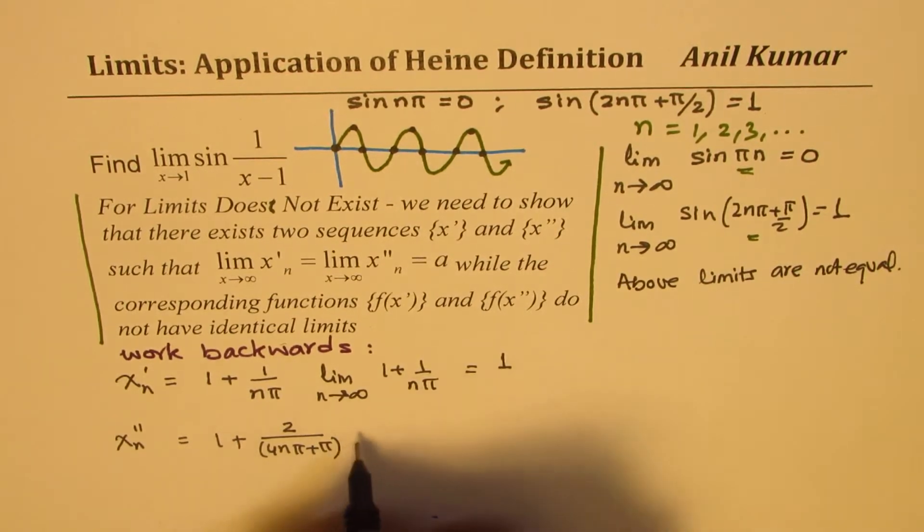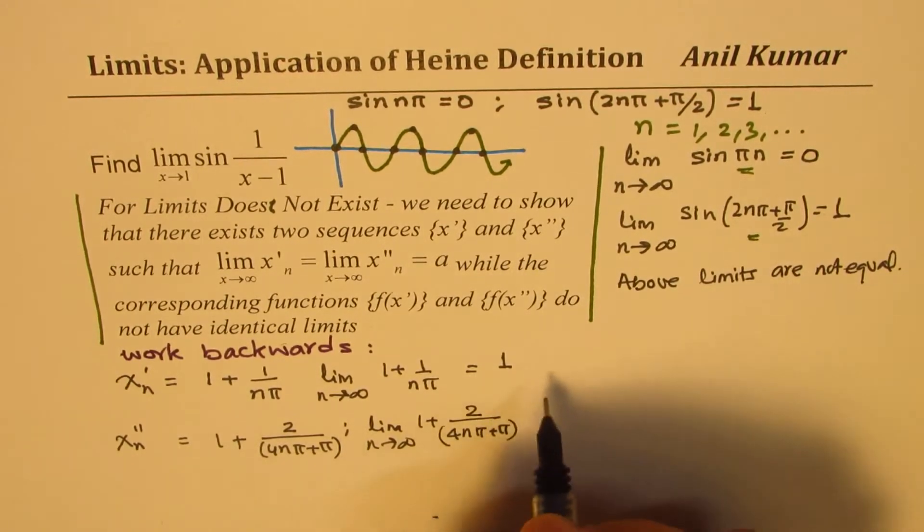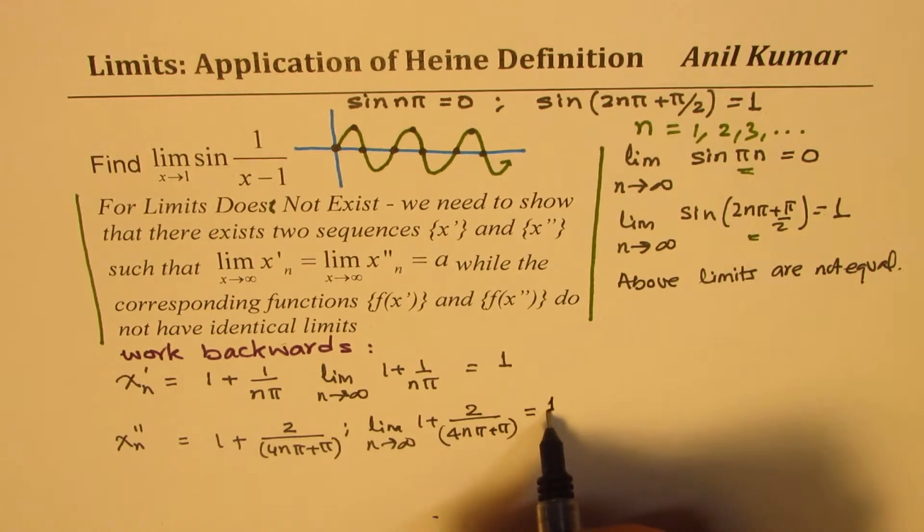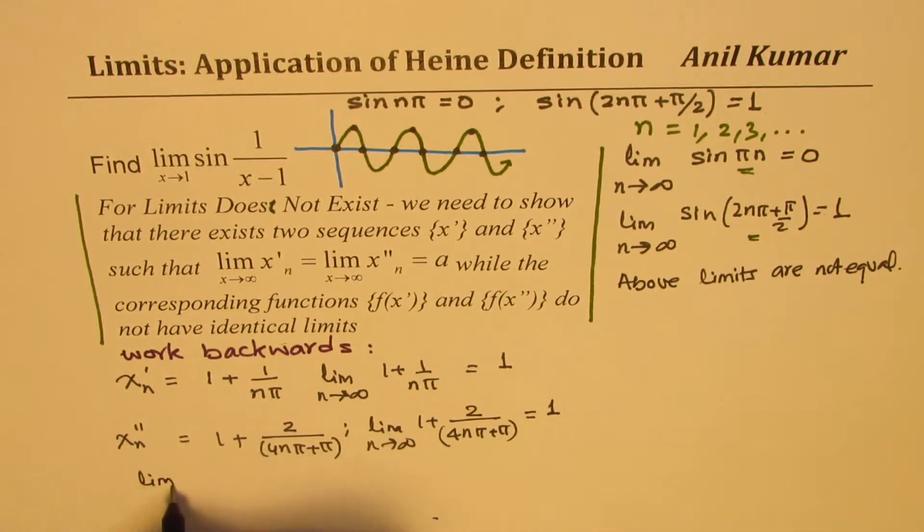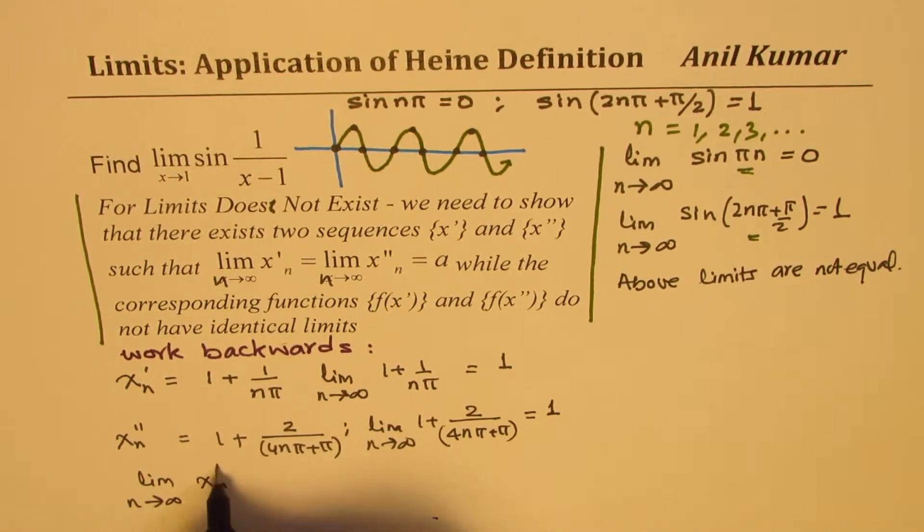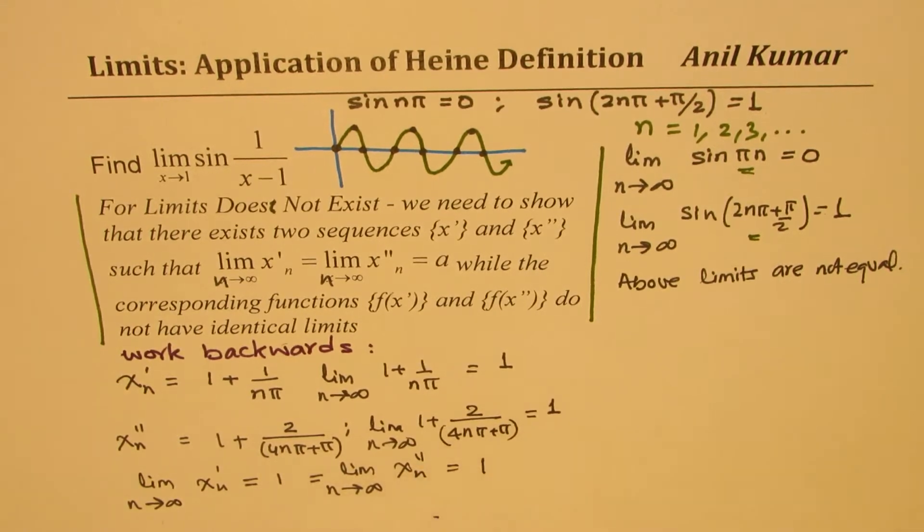Now that gives us the limit as n approaches infinity for 1 plus 2 over 4n pi plus pi. If n is very large, this whole number is approaching 0, so we get 1. So what we see here is that the limit as n approaches infinity for x_n prime is equal to 1, and which is also equal to limit as n approaches infinity for x_n double prime, which is also 1.